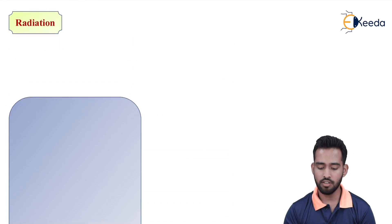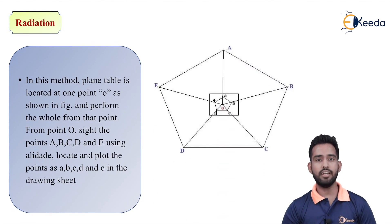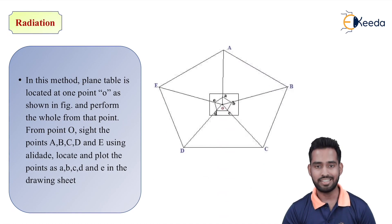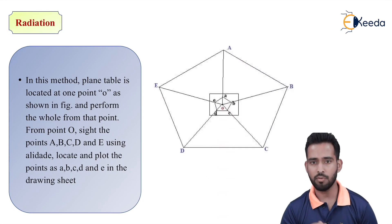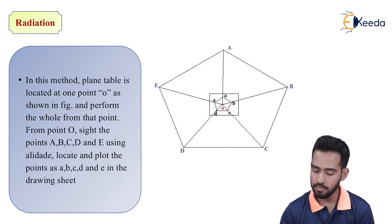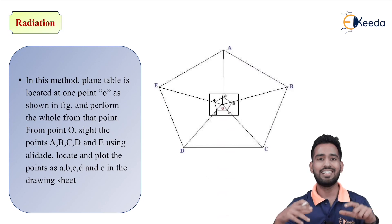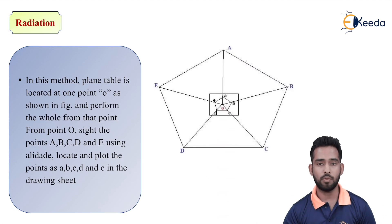The first method is Radiation. As the name indicates, we have to draw different rays towards the objects we have to draw on the sheet. In this method, first of all, as you can see in the figure, we have to set up an instrument at nearly the center of the plotted area — the area we have to plot.